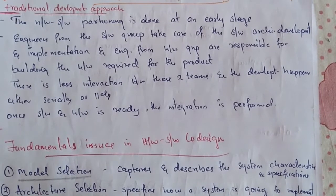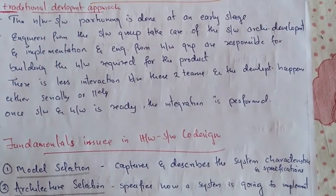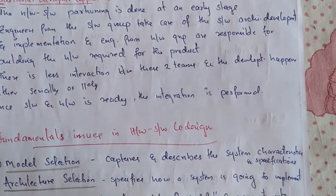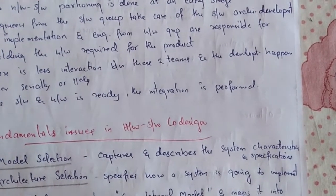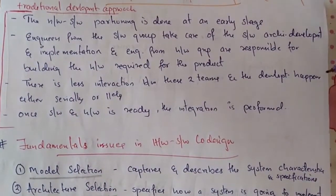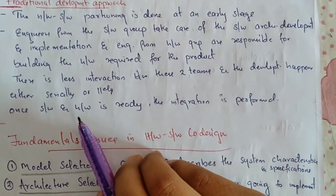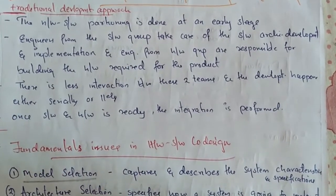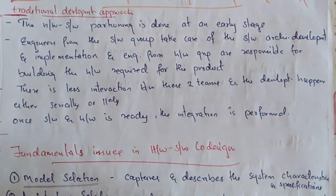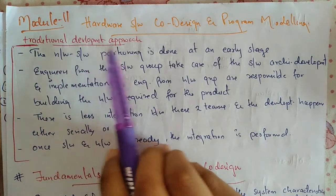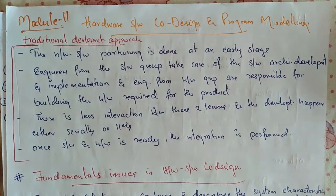Engineers from the hardware group are responsible for building the hardware required for the product. There is less interaction between these two teams, and development happens either parallelly or serially. Once the software and hardware are ready, integration is performed. All these steps come under the traditional development approach of hardware-software co-design.